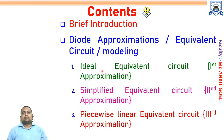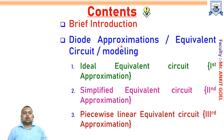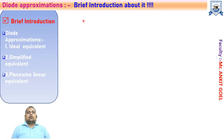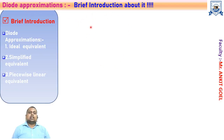We have three types of approximations. The first is the ideal equivalent circuit, the second is the simplified equivalent circuit, and the third is the piecewise linear equivalent circuit. We will see why we need these models and how they are represented, and discuss the different types of diode approximations.